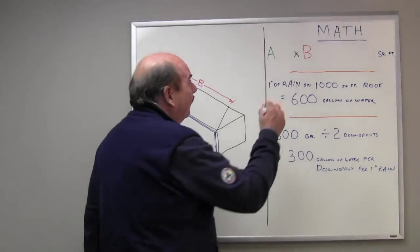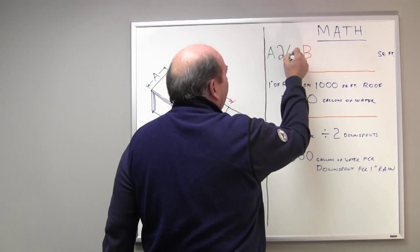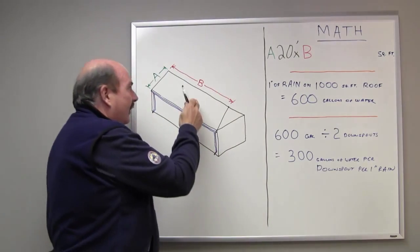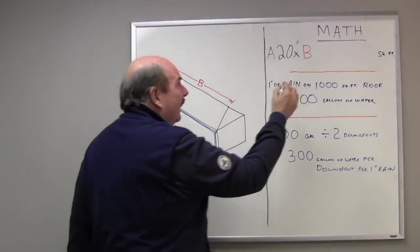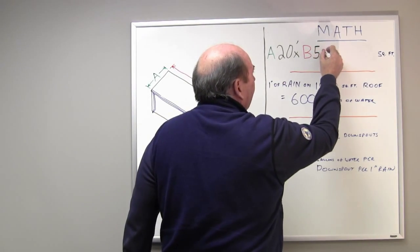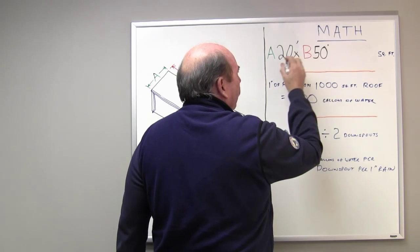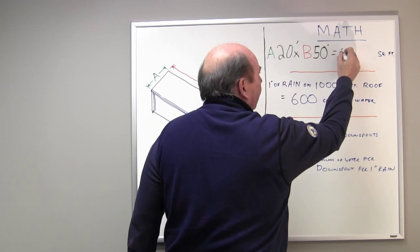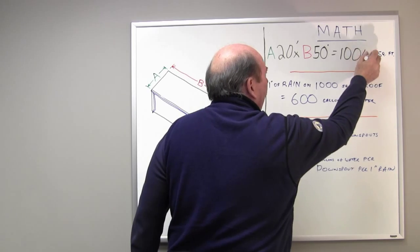For example, let's say A equals 20 feet. Let's say dimension B, the length, equals 50 foot. Twenty foot times fifty foot equals one thousand square feet.